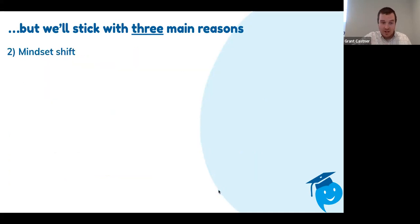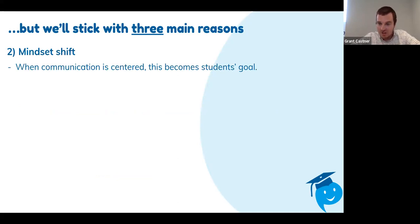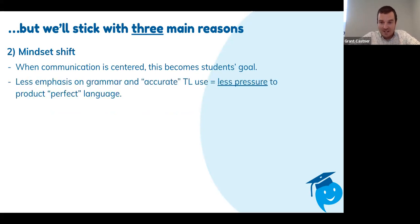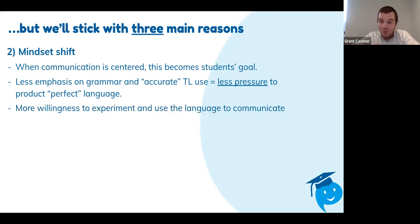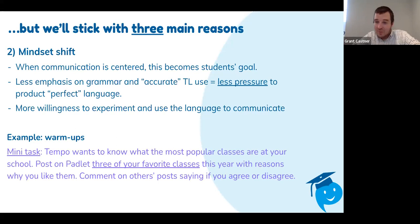Number two is a mindset shift. When we center communication, it becomes the student's goal. When we emphasize less on grammar and accurate target language use — not to say that we can't — there's less pressure on students to produce so-called perfect or accurate language. They're not worrying: 'Oh, what if I make a mistake? He's going to mark off points.' When we center communication and using the language for a purpose to complete a task, that becomes their goal, and they're less anxious about grammar. One of the benefits is more willingness to experiment and use the language to communicate. An example I like is warmups: Tempo — our unofficial Extemporary mascot — wants to know the most popular classes at your school.